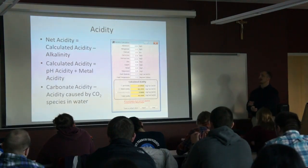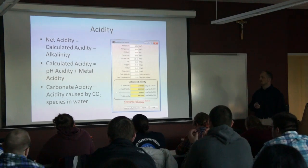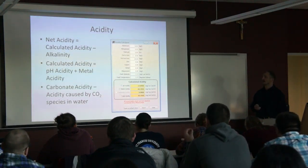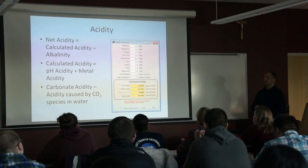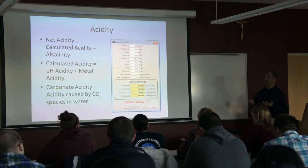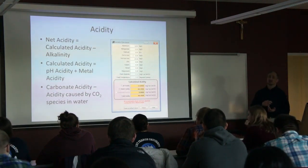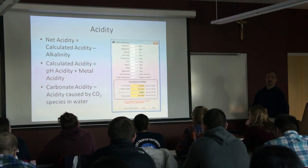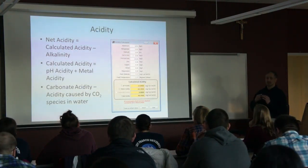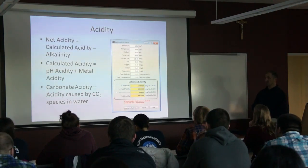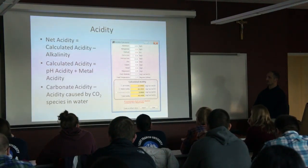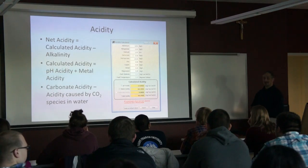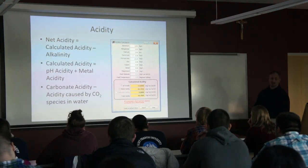Acidity is the main thing of focus when you're looking at mine water treatment, typically. Net acidity — acidity by definition is how much alkaline material is needed to neutralize the acidity in the water. You're basically trying to find out how much alkaline you have to add to get rid of any acidity in that water. Net acidity refers to specific components of acidity. Net acidity is equal to calculated acidity minus the alkalinity that's in the water.